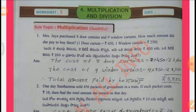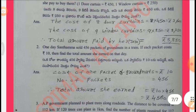Subtopic: Multiplication. Mr. Jaya purchased 8 door cuttings and 9 window cuttings. How much amount did she pay to buy them? Solution: Cost of 8 door cuttings = 8 x 450 = Rs. 3,600. Cost of 9 window cuttings = 9 x 250 = Rs. 2,250. Therefore, total amount paid = Rs. 3,600 + Rs. 2,250 = Rs. 5,850.